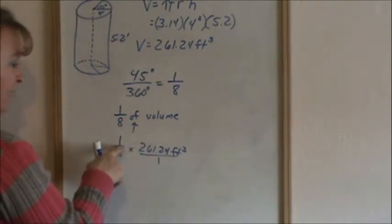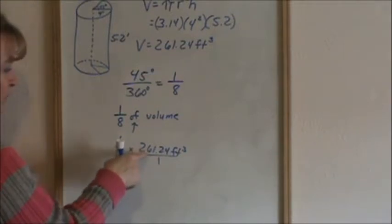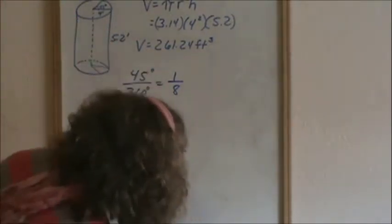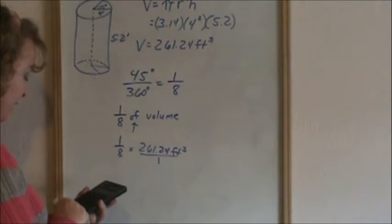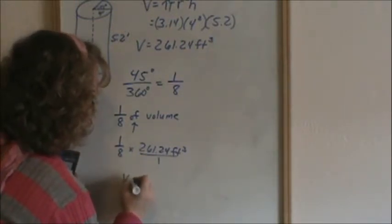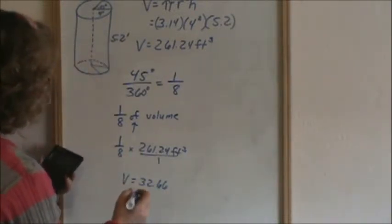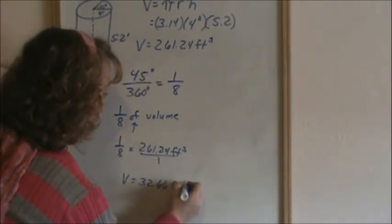Now when you multiply fractions, you're just multiplying numerator to numerator and denominator to denominator. And you will see that you have 261.24 divided by 8. And that comes out to the volume of the 45 degree section would be 32.66 cubic feet.